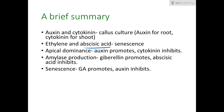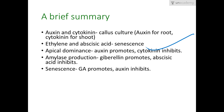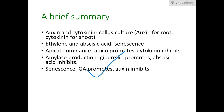Ethylene and abscisic acid have a synergistic function — they both promote senescence. For antagonistic points: apical dominance is promoted by auxin and inhibited by cytokinin. Amylase production is promoted by gibberellin and inhibited by abscisic acid. Regarding senescence, gibberellic acid promotes it while auxin inhibits senescence.